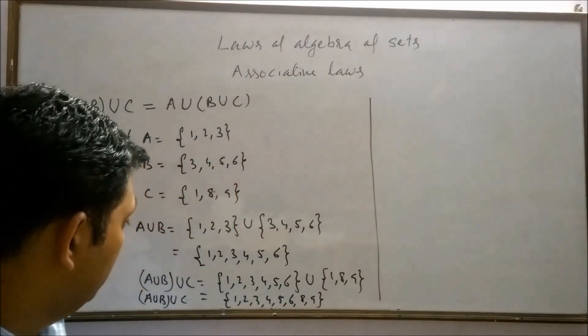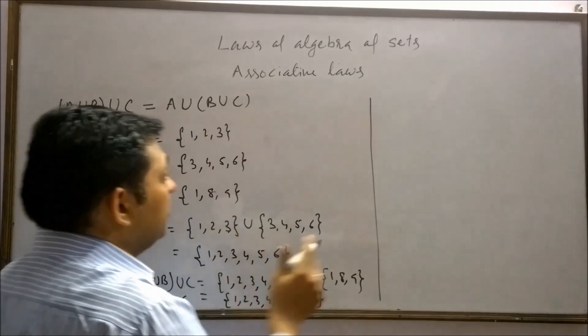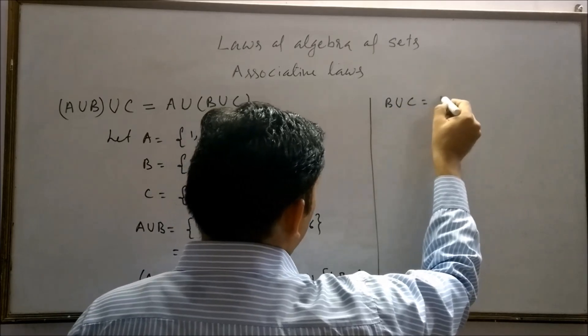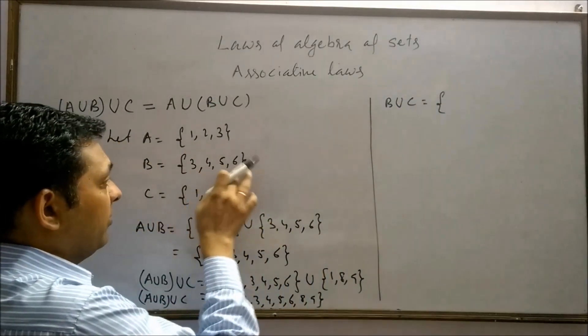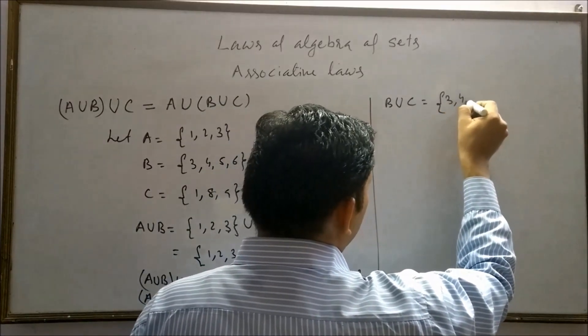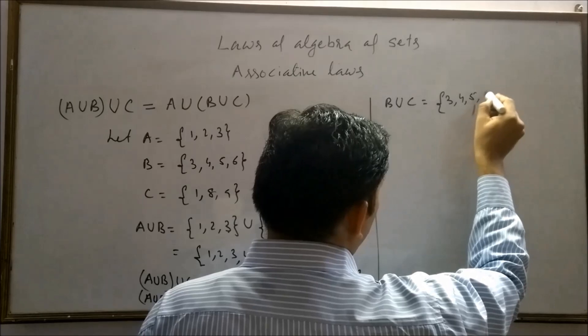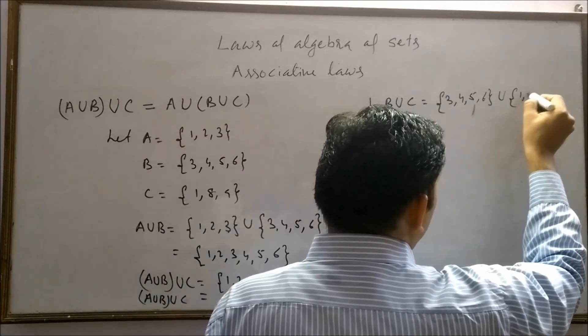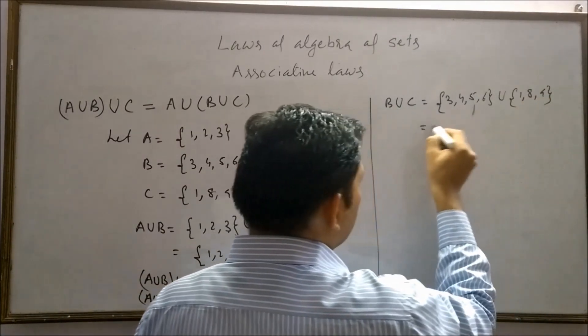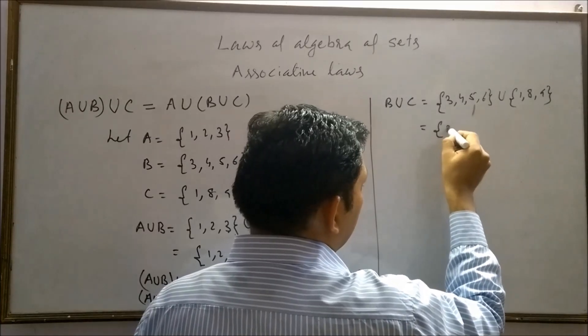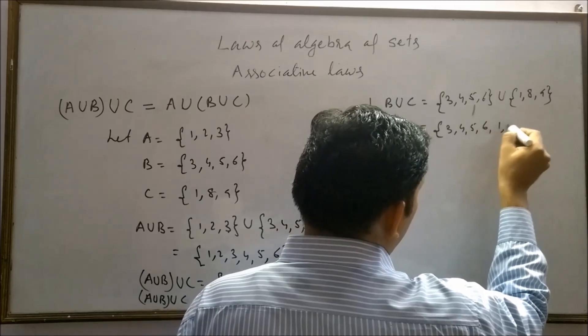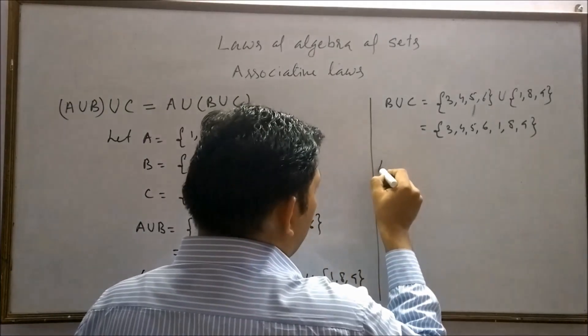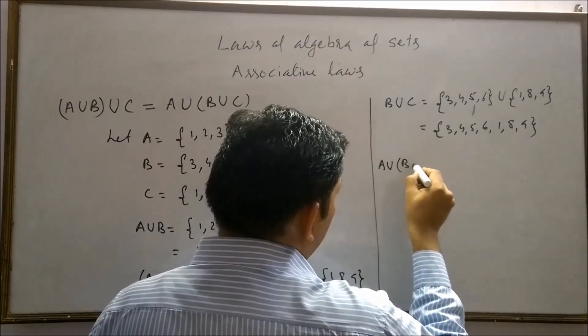This result can further be obtained from this side. First of all, find B union C. B is here 3, 4, 5, 6 and set C contain 1, 8, 9. Now combine these two sets: 3, 4, 5, 6, 1, 8, 9.